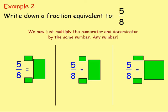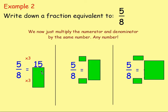Example two: write down a fraction equivalent to five eighths. What you want to do is multiply the numerator and denominator by the same number. Three. So we're multiplying the top by three and the bottom by three. Five times three gives you 15, and eight times three gives you 24. So you end up with 15 over 24 - that is a fraction that's the same as the five eighths. It's an equivalent fraction.